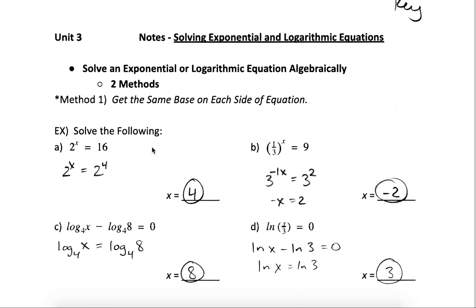One method we can use for some simple equations is the same base method. If you can get the base to be the same on either side of your equal sign, then you can set up equations that just involve your exponents. For example, 16 can be rewritten as 2 to the 4th. Now I can ignore my bases because they're both 2, and I can set up my equation x equals 4. That's our answer.